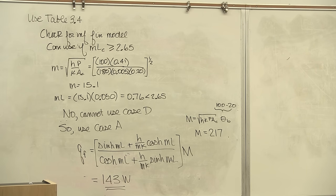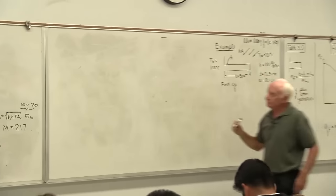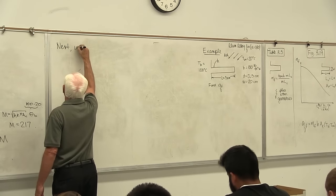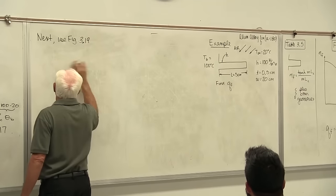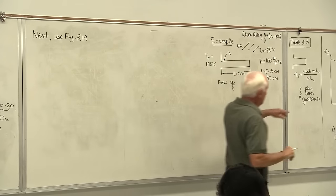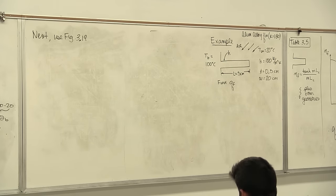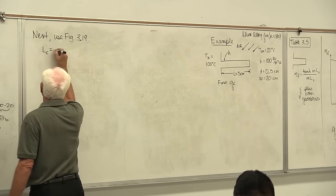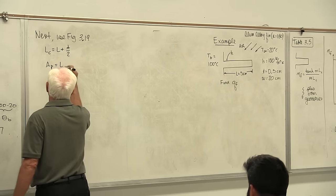Why not also try Figure 3-19? There's a rectangular fin — looks just like the eraser picture. To use Figure 3-19, you need Lc equal to L plus T over 2, and the profile area Ap equal to Lc times T.